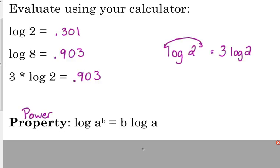That says if you have log of a to the b, then you can move that exponent to become a coefficient, and those two logarithms, even though they look pretty different, they actually have the same value. Log of 8 has the same value as 3 times the log of 2.